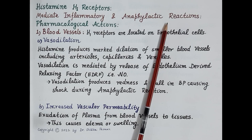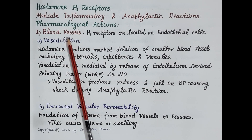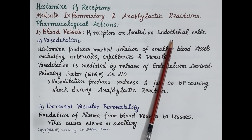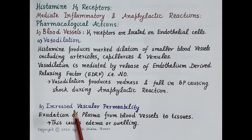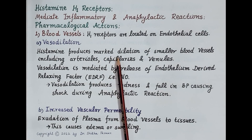Now let's study the effect of histamine on blood vessels. The innermost lining of the wall of a blood vessel is called the endothelium, made up of endothelial cells. H1 receptors are located on the endothelial cells of blood vessels. Histamine causes vasodilation, produces increased vascular permeability, and on intradermal injection produces the triple response.